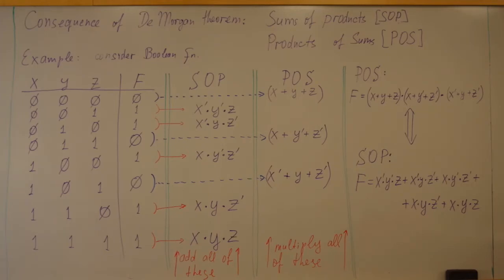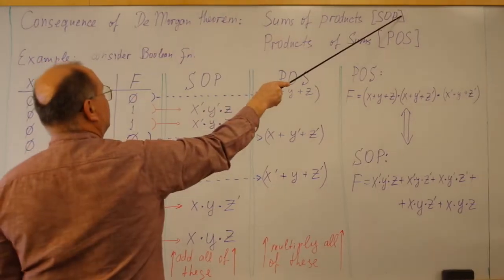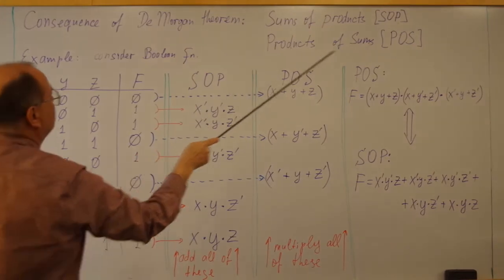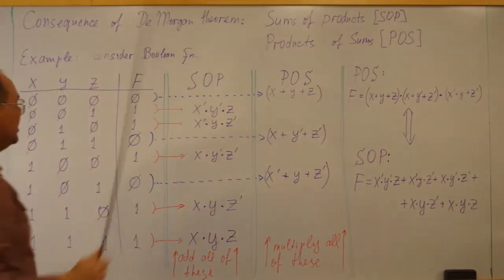One of the consequences of De Morgan's theorem is that any logic function we should be able to present in two equivalent forms: as a sum of products, I call it SOP, or as a product of sums, I will call it POS.